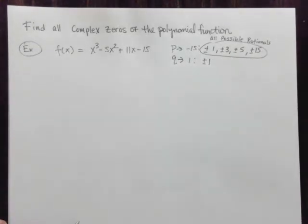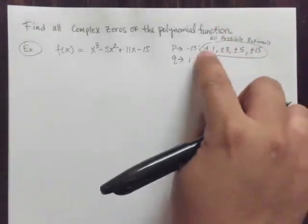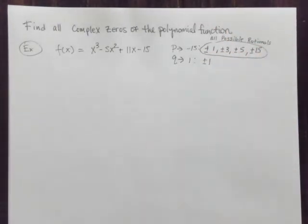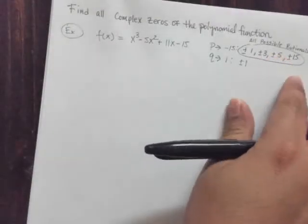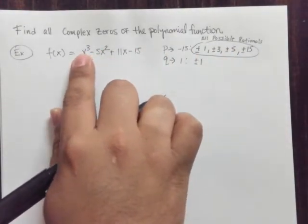Now, what I encourage you to do is to do 8 synthetic divisions to find out which one of those 8 may be zeros. And potentially, there are 3 zeros.